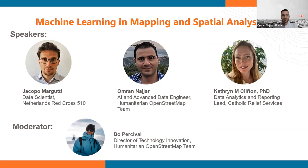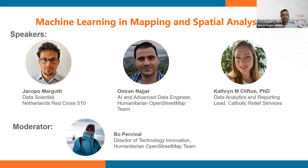Hello, everyone. This is Omran Najjar. I'm the AI and satellite engineer with the Humanitarian OpenStreetMap Team. My background is software engineering and information systems. We're looking at how we can integrate and make mapping for humanitarian purposes easier using advanced technologies, while keeping openness and core values integrated in those technologies.